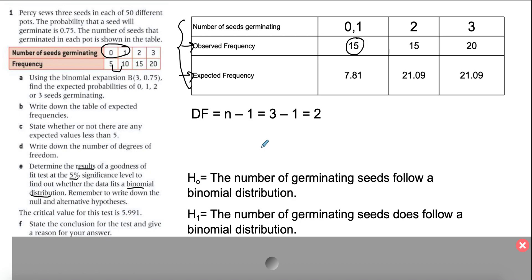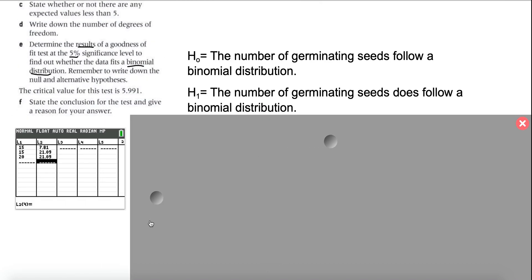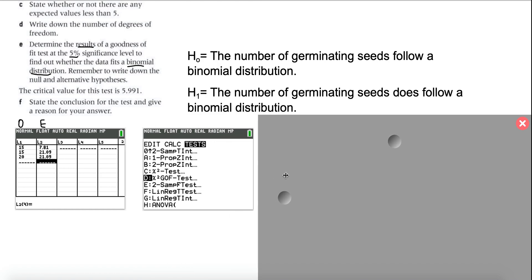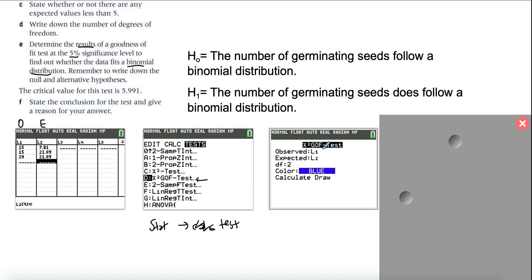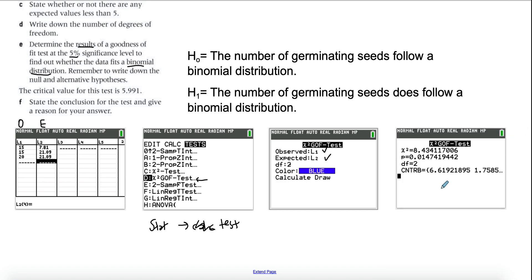In the calculator, go to Lists: L1 is the observed frequency and L2 is the expected frequency. Then go to Stat → Tests → Goodness of Fit Test — be careful not to select the chi-square test. Enter L1, L2, and degrees of freedom = 2, then press Calculate. This gives the chi-square value and the p-value, which is what Part E asks you to write down.